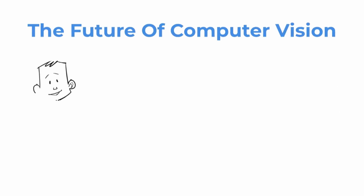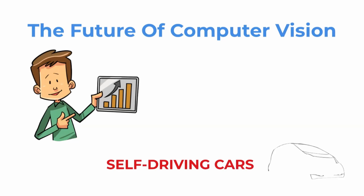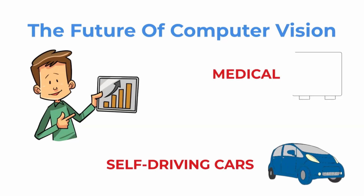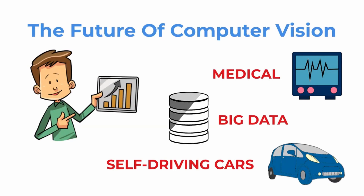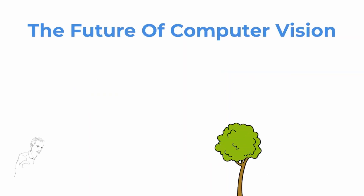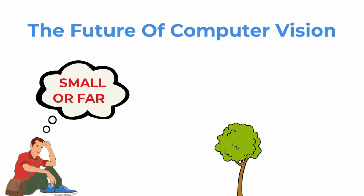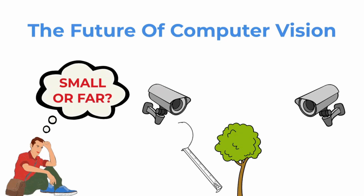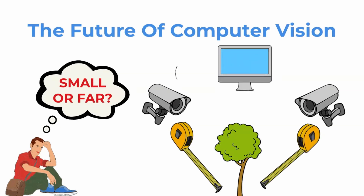The future of computer vision: it is an intensively progressing field with huge demand in self-driving cars, medical applications, big data analysis, and more. Still, there are many difficult cases — like different angles, lighting, and detecting many objects in one image. It's also a problem to detect if something is small or far away. This might be solved by 3D cameras, which are a pair of cameras that imitate human sight, but this means more data to process. Many cases can be solved by using different sensors like lidar or radar, which is why modern solutions often combine many sensors.